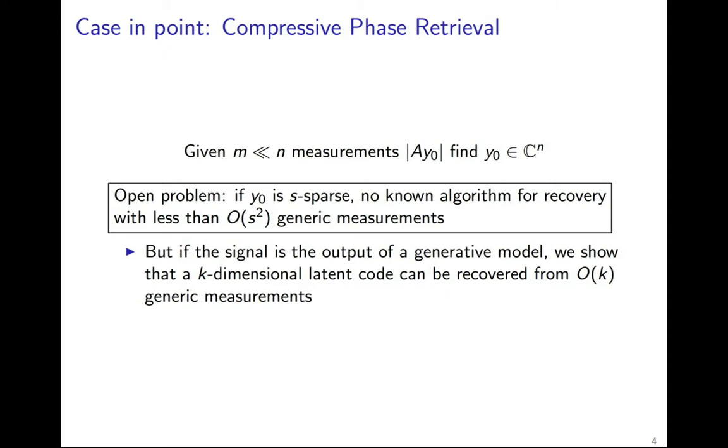A specific case in point is the compressive phase retrieval problem, which asks to recover an n-dimensional signal given the absolute value of linear observations, where the number of measurements is far less than n.